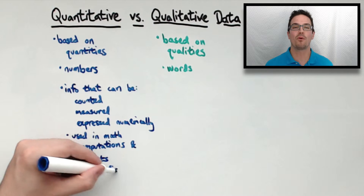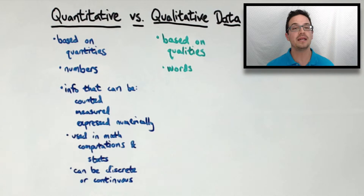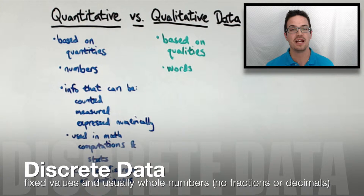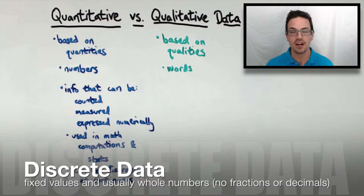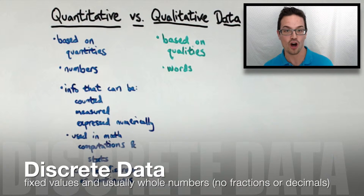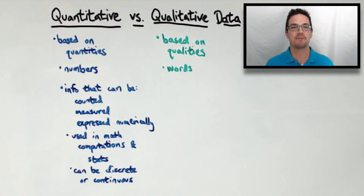It is also important to know that quantitative data can either be discrete or continuous. Discrete data deals mostly with whole numbers, meaning there would generally be no fractions or decimals. An example would be something like the number of people in your family or the number of pets that you have. You cannot have 2.5 dogs or 1.2 family members, so these would be examples of discrete data.